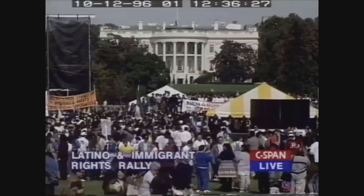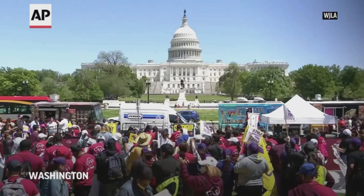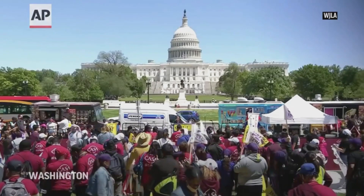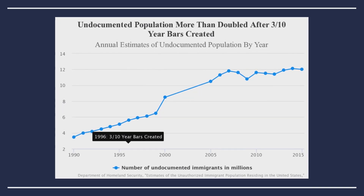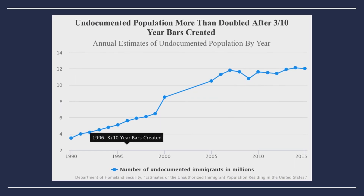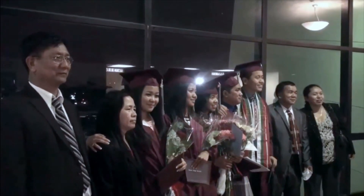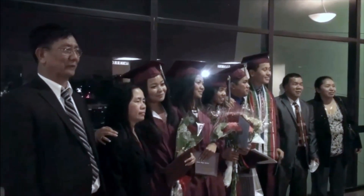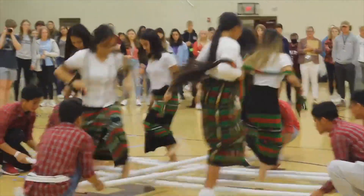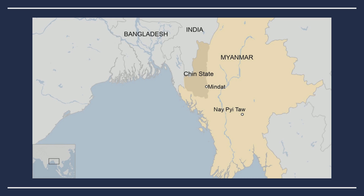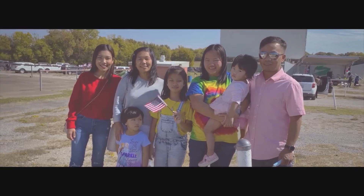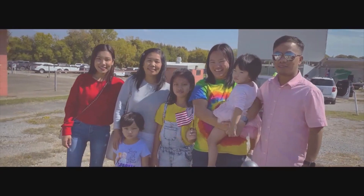Although IIRAIRA was passed in 1996, its effects are still seen today. The 3- and 10-year bars are still in place, yet the number of undocumented immigrants in the United States has increased from 3.5 million in 1993 to 11.4 million in 2019. In our hometown of Tulsa, Oklahoma, the population of Burmese and Zomi people has increased significantly over the last several years. Over 7,000 Zomi people from the Chin State in Myanmar have moved to Tulsa in the last five years, and now Tulsa is said to be the largest community of Zomi people in the United States.